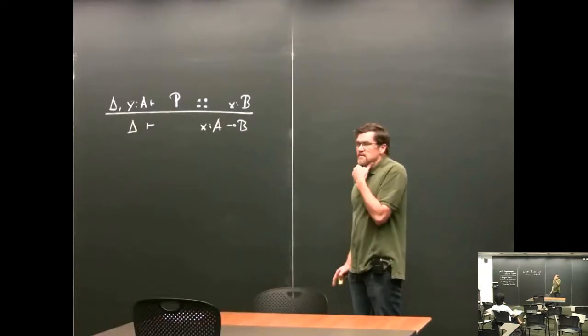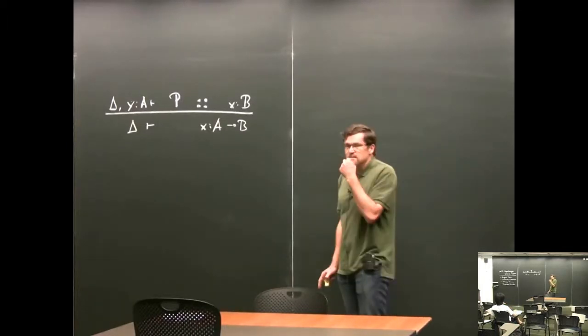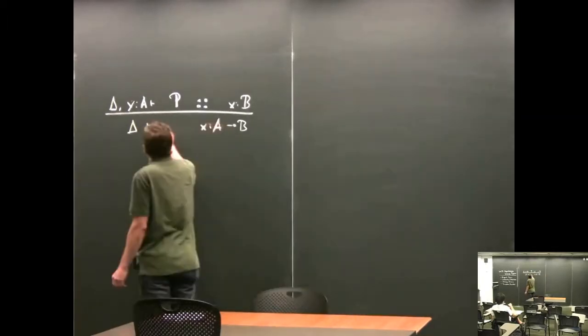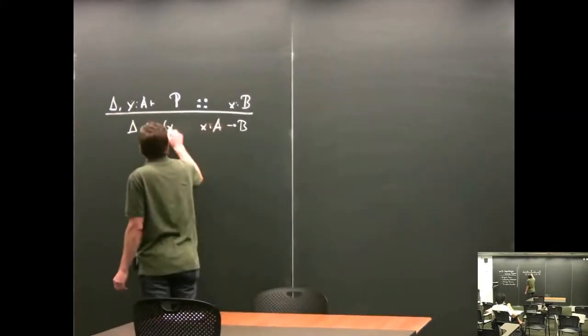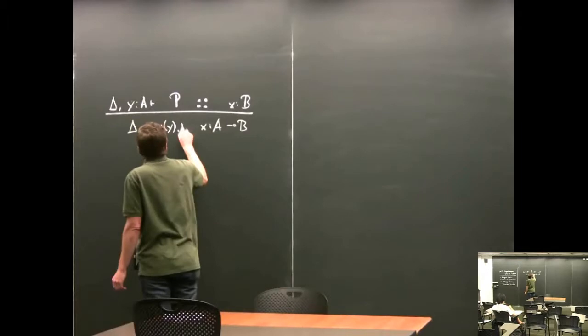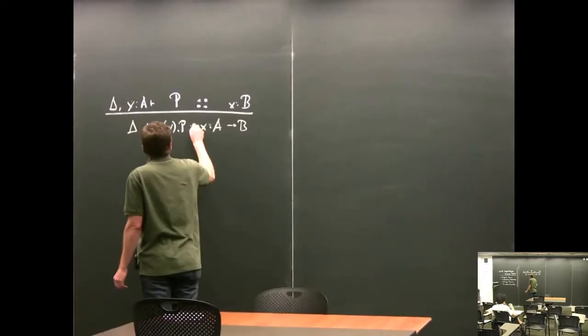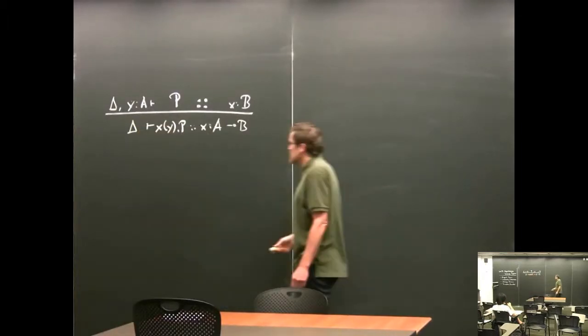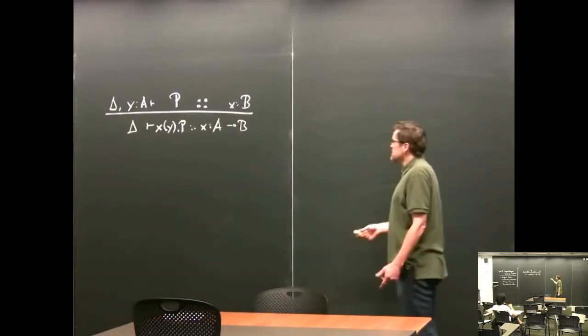What's the session type interpretation of A implies B? We input X along Y and then proceed as P. So this is the right rule.